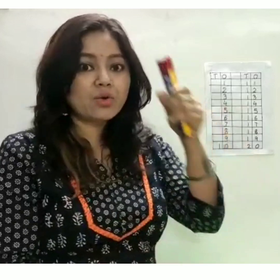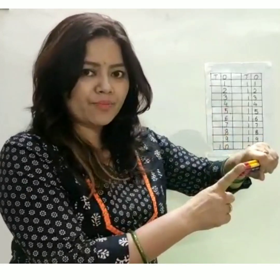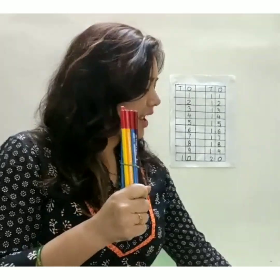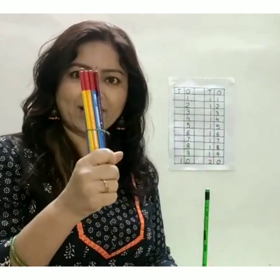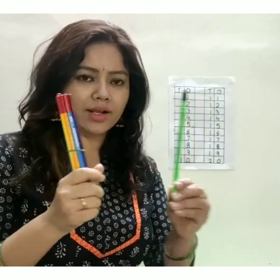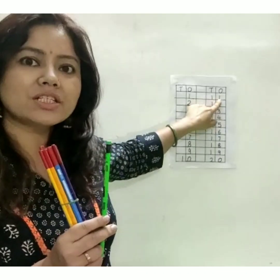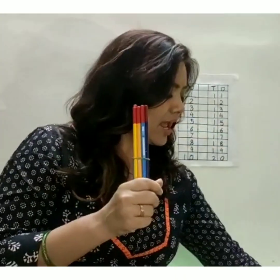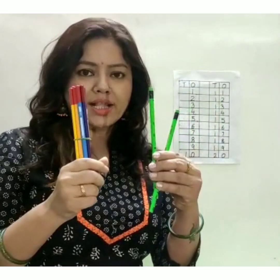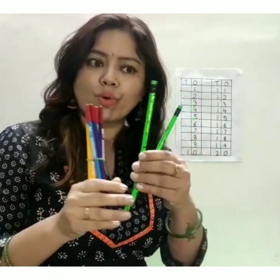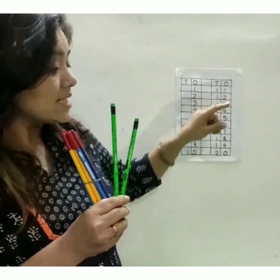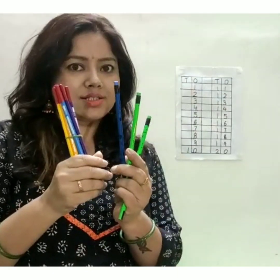So we will call it one ten. Say it again, one ten. Now one ten and one one. One ten and one one equals to eleven. One ten and two ones equals to twelve. Same way one ten and three ones equals to thirteen, and so on.